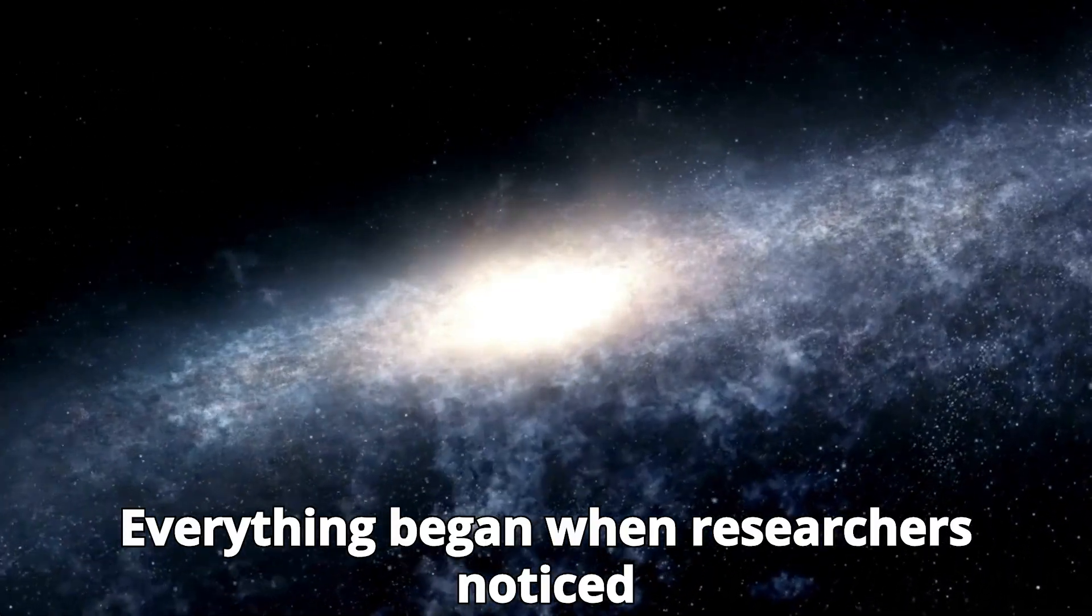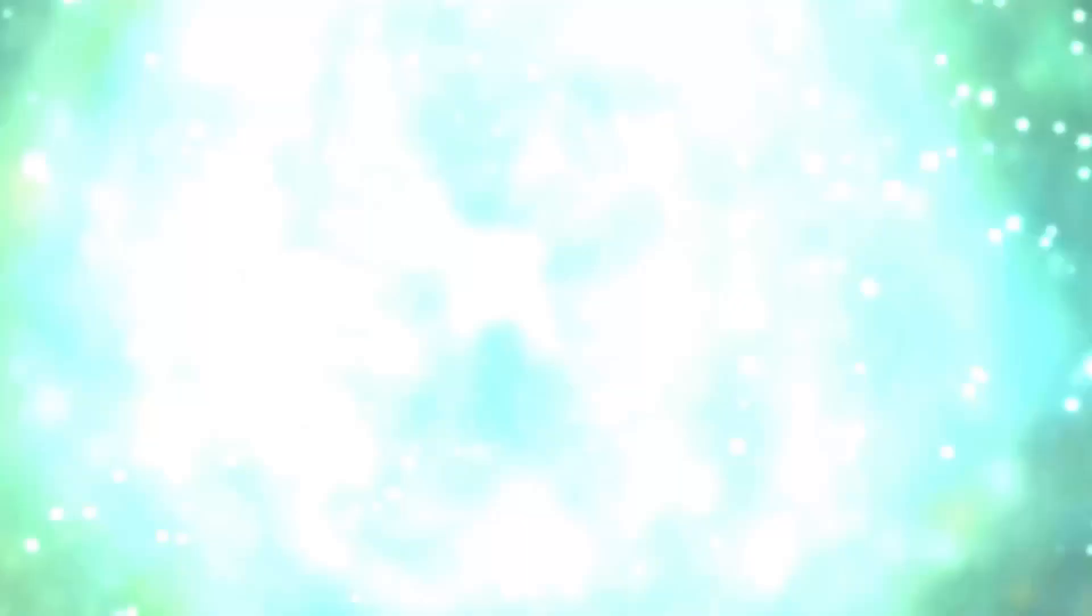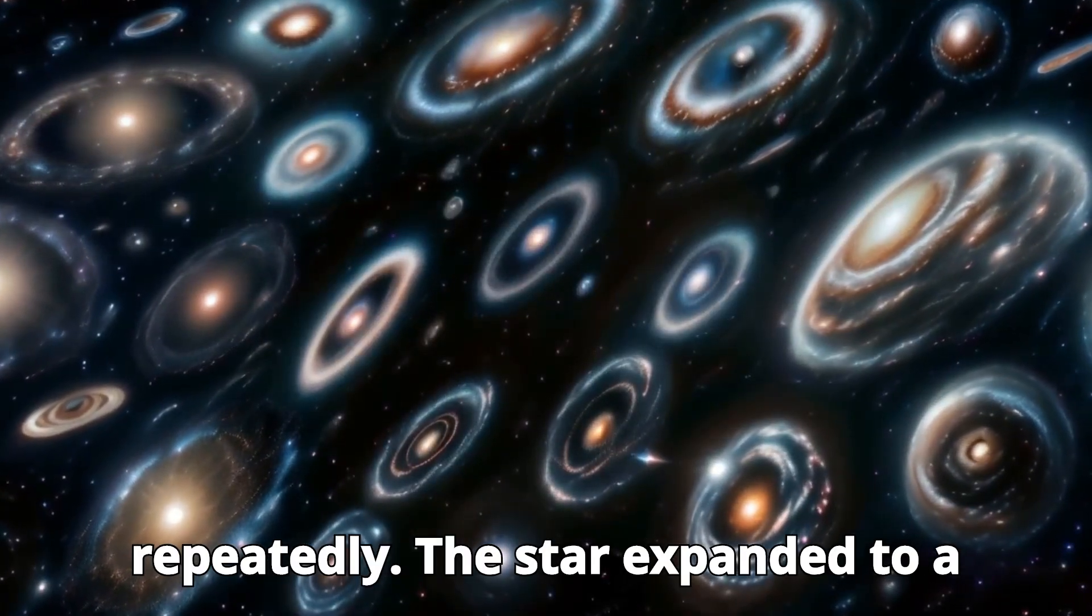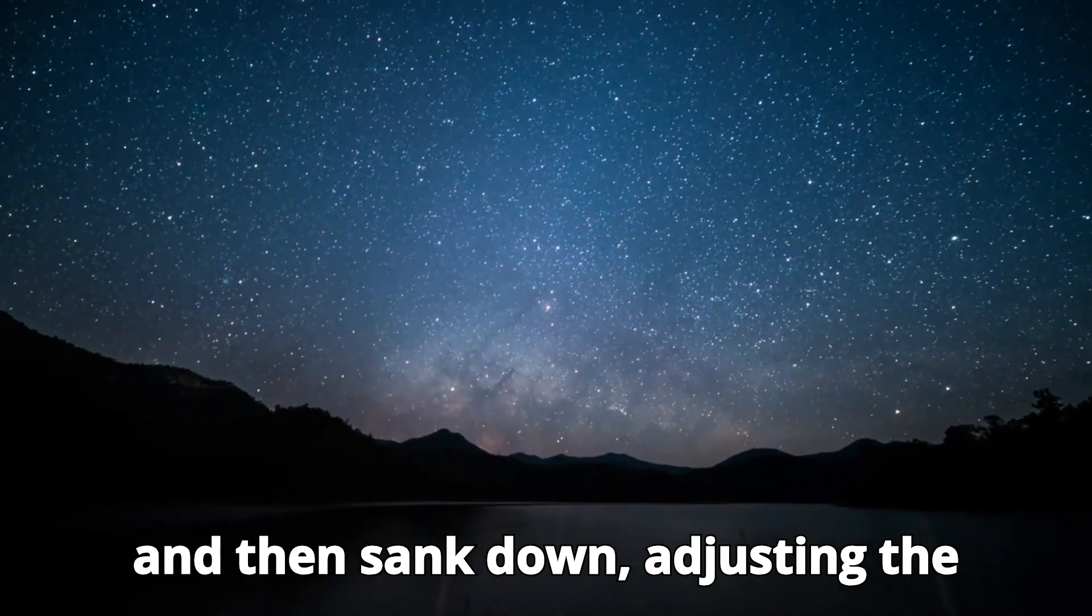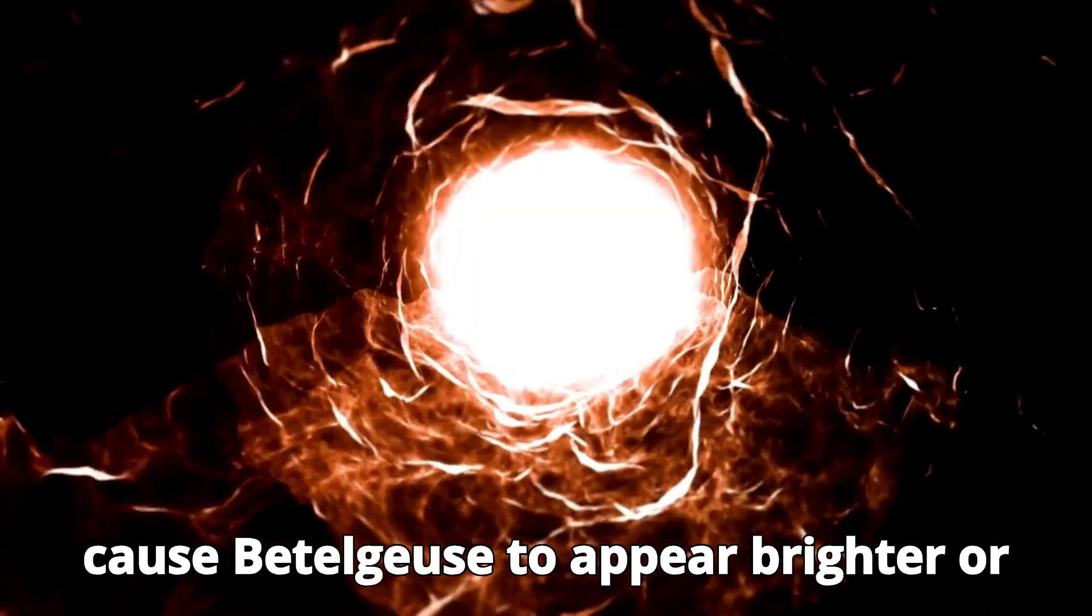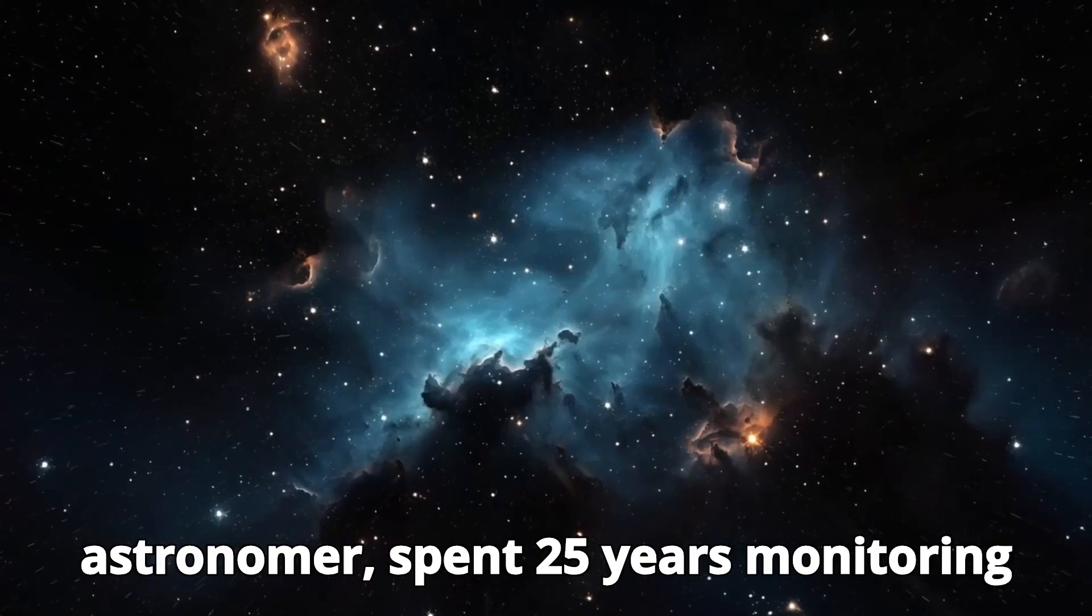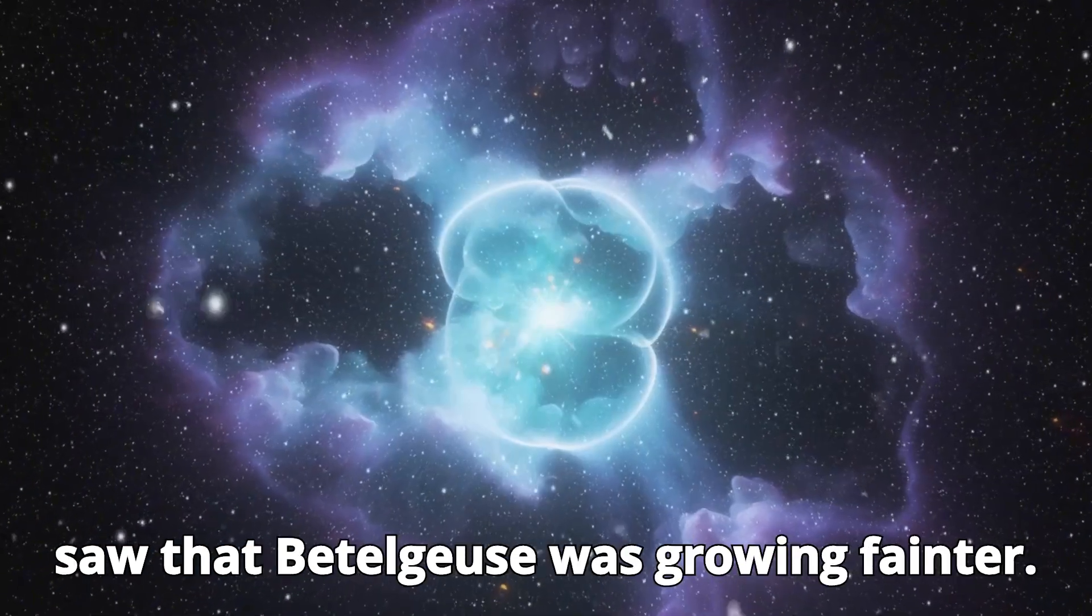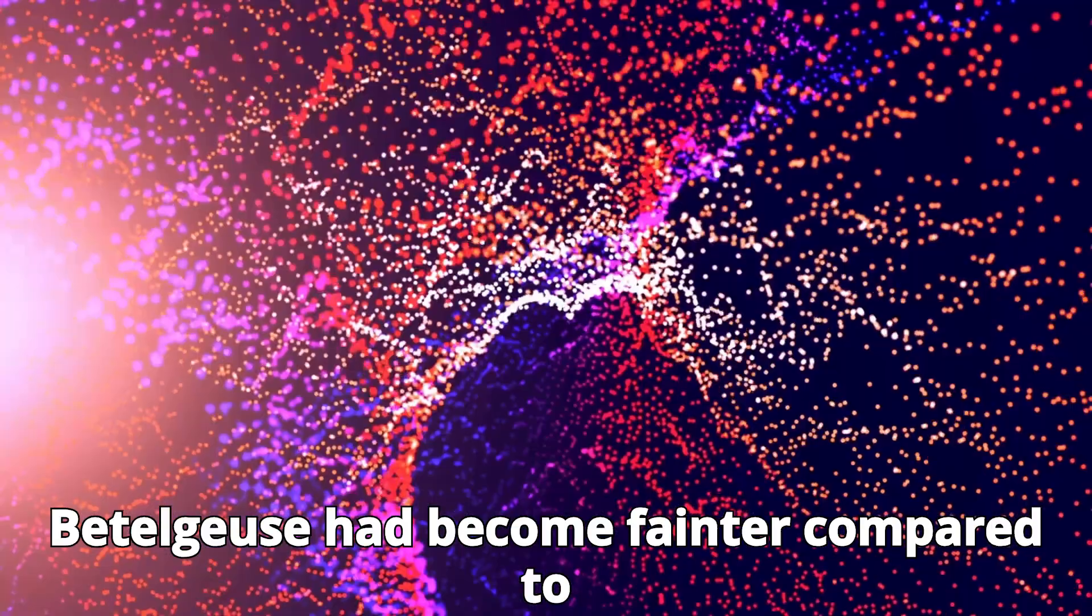Everything began when researchers noticed that Betelgeuse had been continuously becoming dimmer for over a hundred years. Observations have shown that Betelgeuse, as a red supergiant star in its late stage, has brightened and dimmed repeatedly. The star expanded to a colossal size, and bubbles of material rose from inside the star to its surface and then sank down, adjusting the distribution of cooler and hotter regions on the star's surface. These changes cause Betelgeuse to appear brighter or fainter over time. A group of astronomers, including an amateur astronomer, spent 25 years monitoring Betelgeuse's brilliance using a telescope with a 10-inch diameter. They once again saw that Betelgeuse was growing fainter. After a few months, they noticed that Betelgeuse had become fainter compared to the last 25 years.